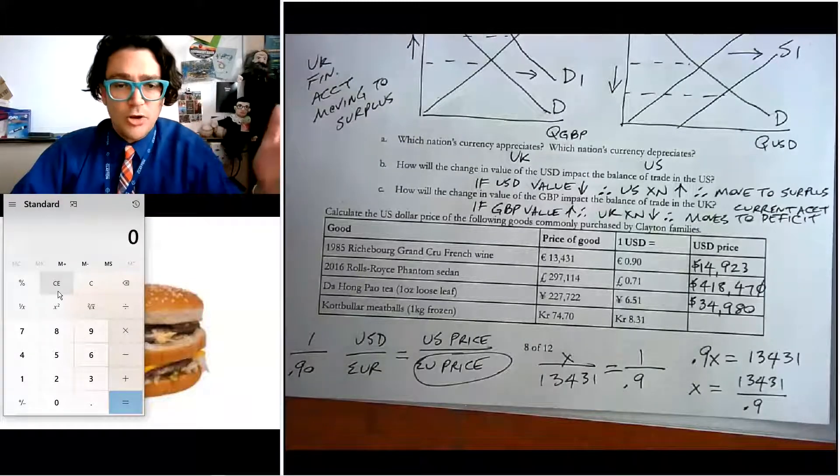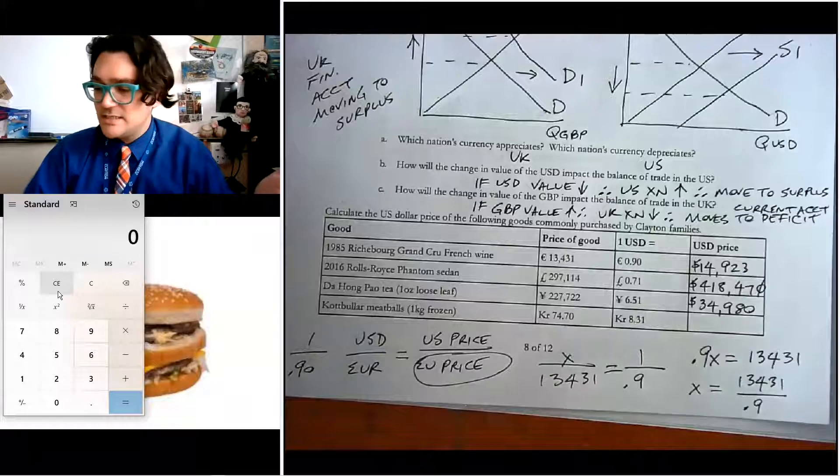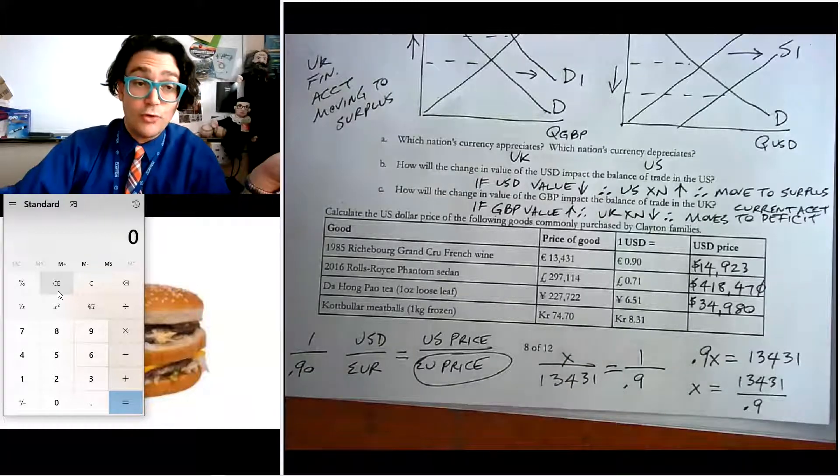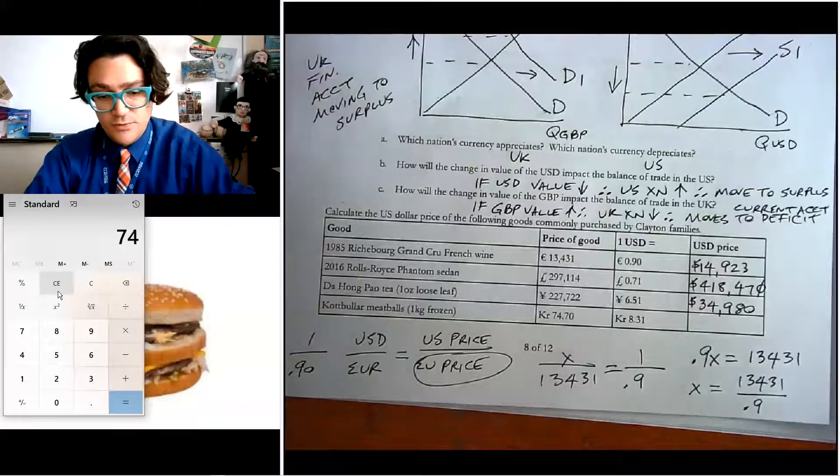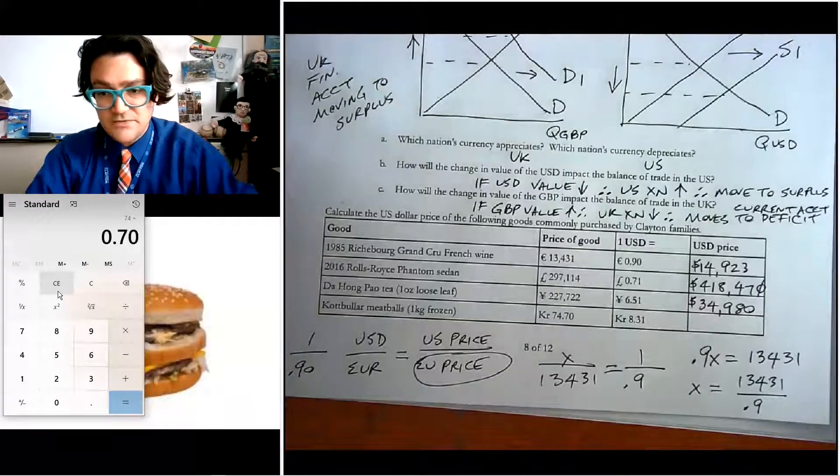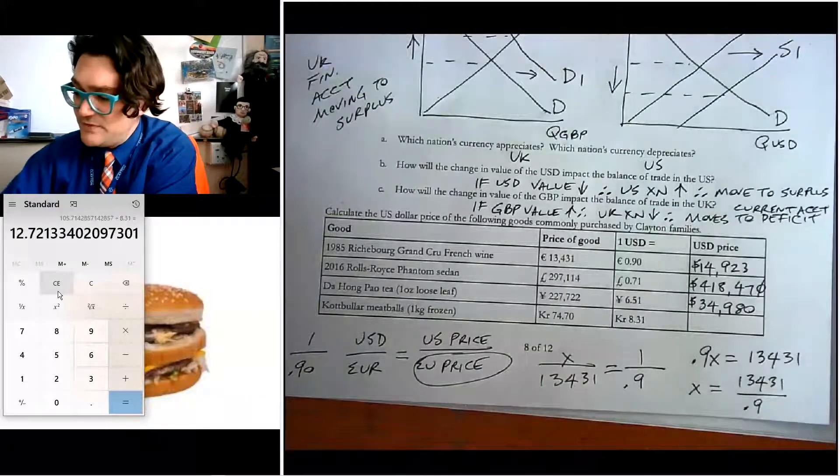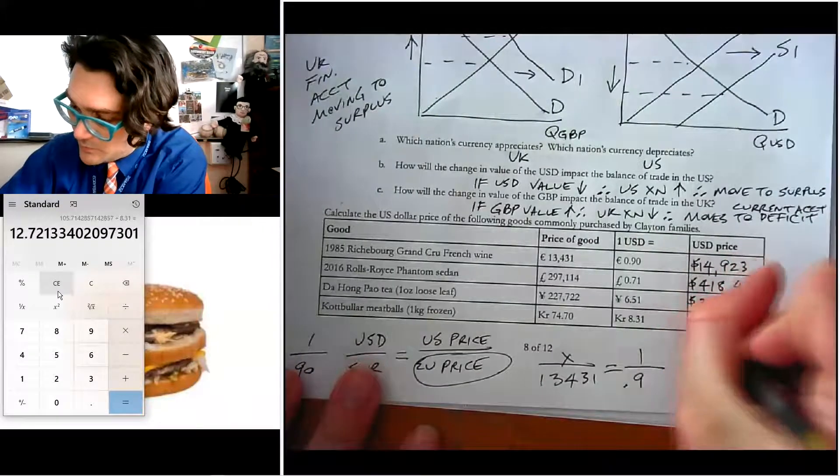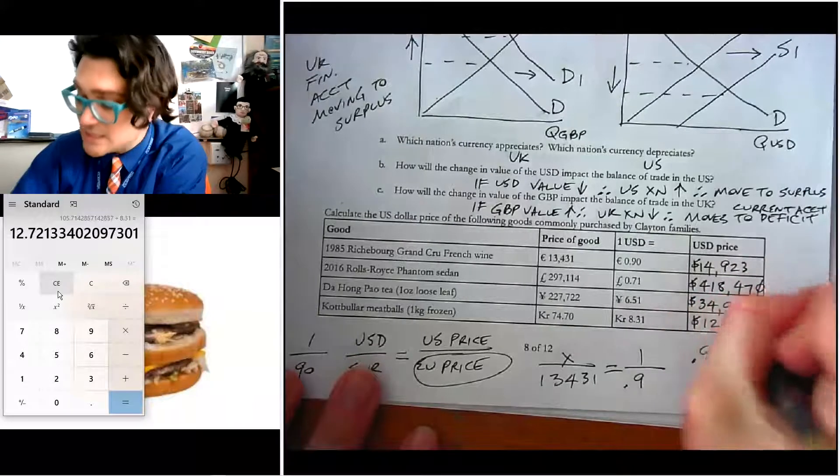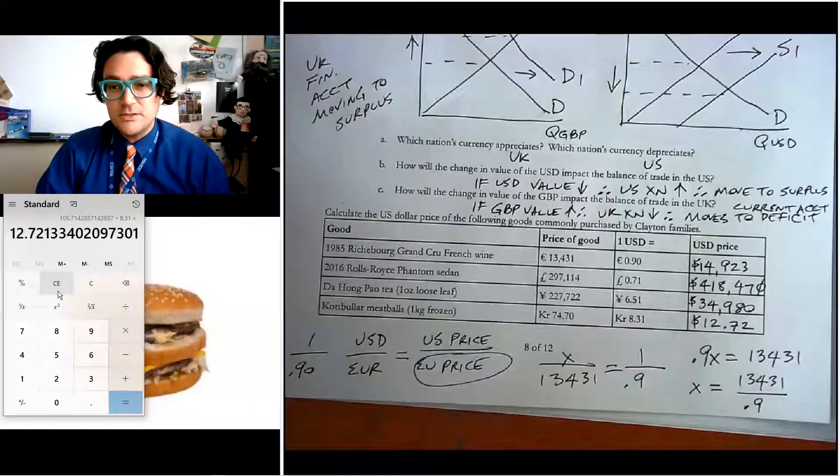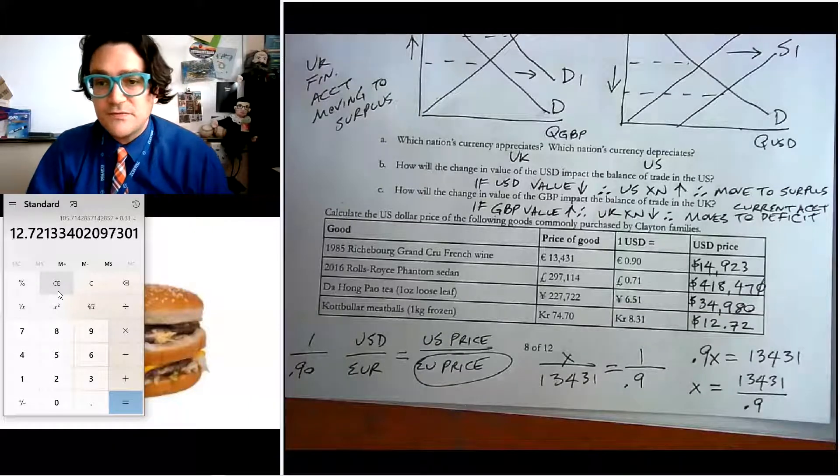Now, Katbollar meatballs from Ikea. In Sweden, they'd be 74.70 kroner. So 74.70 divided by 8.31 is $12.72, which is that bad, I guess, for a couple of pounds of meatballs. I think it's a little overpriced, but, you know, I guess whatever floats your boat.